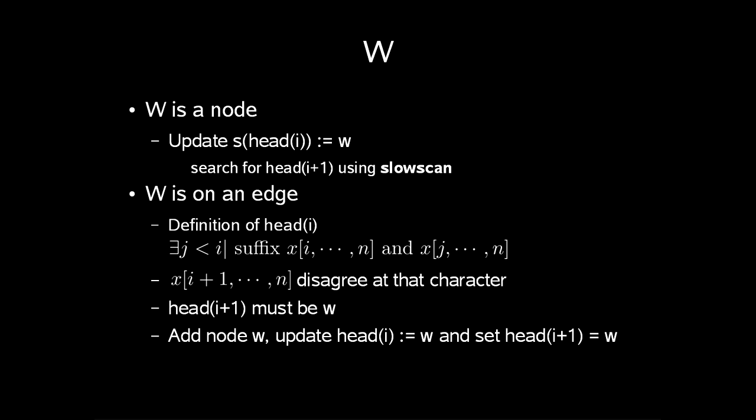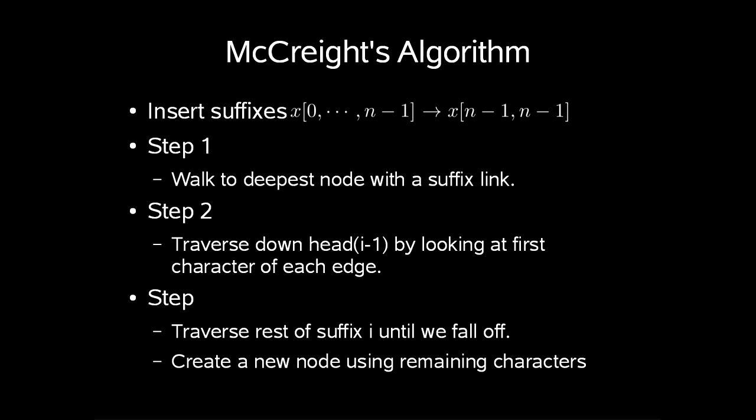And what if w is on an edge? If w is not a node, then all suffix j less than i with prefix w agree on the next letter. By definition of head(i), there is a j less than i such that suffix x[i...n] and x[j...n] differs after head(i). Thus, head(i+1) must be w. So what we do is that we just add node w, update head(i) to be equal to w and set head(i+1) to be w. Many different approaches have been made to the pseudocode, but I would much rather talk about this as a longer description than just give a step by step walkthrough of some pseudocode.